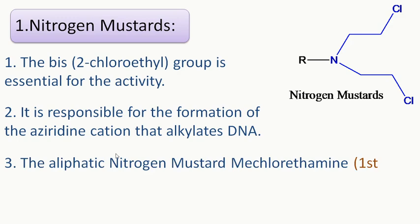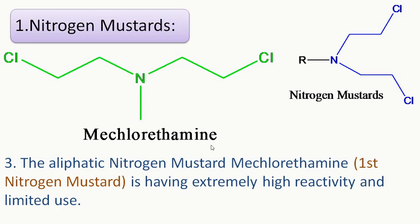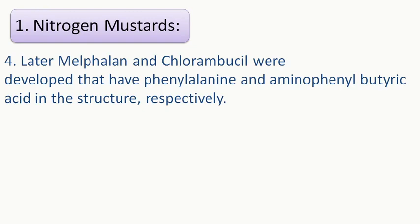The aliphatic nitrogen mustard mechlorethamine was the first nitrogen mustard. It has extremely high reactivity but limited use because it is aliphatic. Aromatic nitrogen mustards are much more stable than aliphatic nitrogen mustards. Mechlorethamine is very unstable and very active, so it has very limited use.